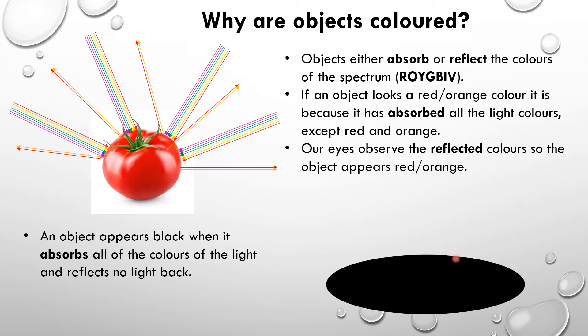Again, we'll have white light hit this black object, but when the light hits the object, all of the colours are absorbed by this material, by whatever the black substance is here. And if all of it is absorbed, and none of it is reflected,